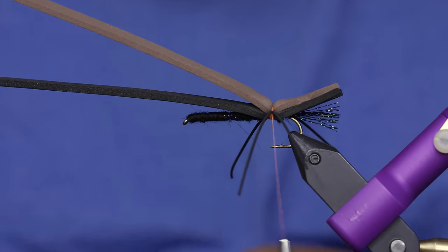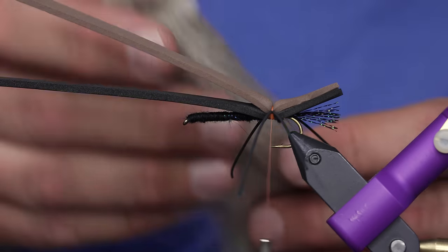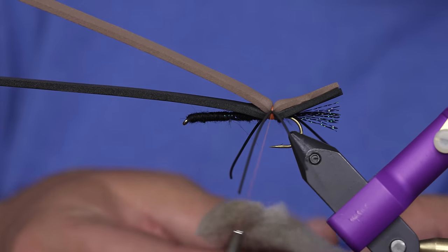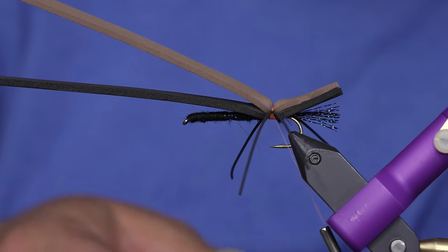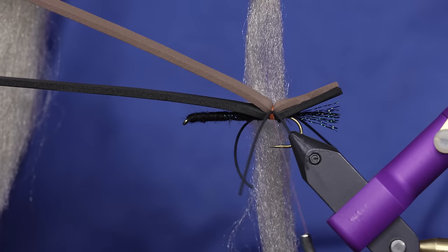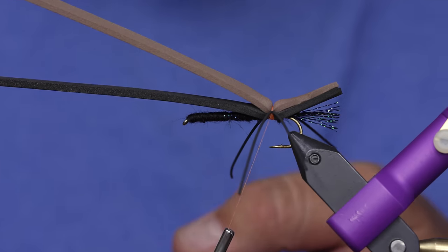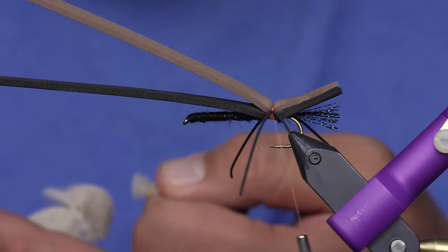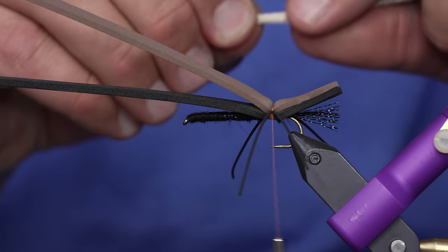So I'm using EP trigger point fibers. You can use normal EP fibers. I don't really like a super bright white wing on these. I want to tone it down, and that's why I like this trigger point. This is the pale morning dun color. It's just like a dirty white. So you need quite a bit of this.